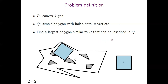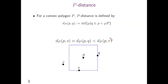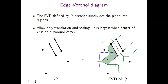I will mention some preliminaries. In this problem, we define the P-distance with the convex polygon P as the following equation. In the figure, R is the farthest from P in P-distance, and Q has the same P-distance from P when P is a square. P-distance defines the H-Voronoi diagram in our problem.